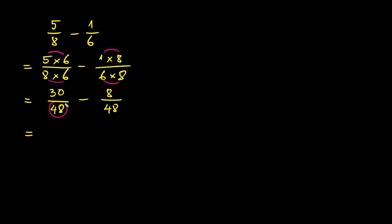Now, both fractions have the same denominator. So we subtract the numerators. 30 minus 8 is 22. So the answer is 22 over 48.